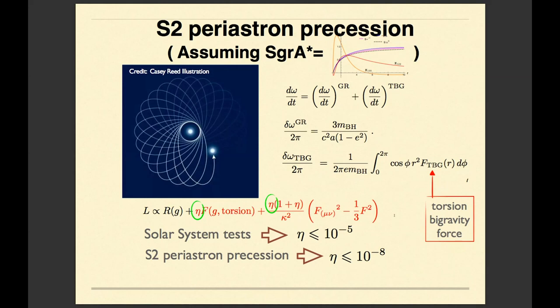Namely, as you remember the slide which is here, I have here the parameter eta, which is a coupling constant of torsion. This periastron precession test gave huge restriction on the coupling constant.